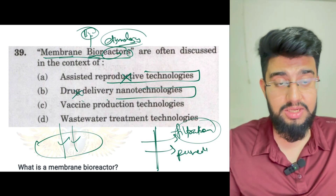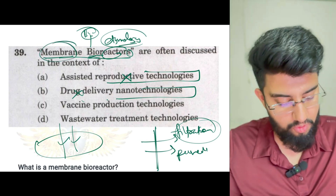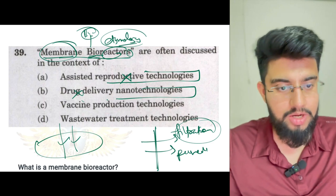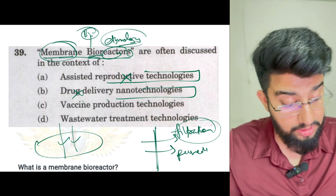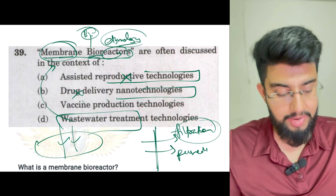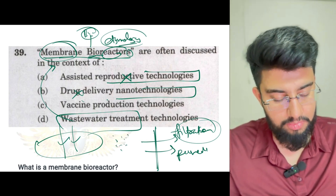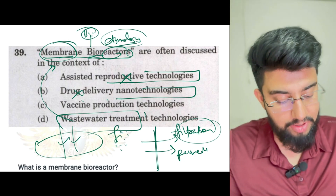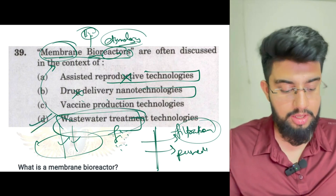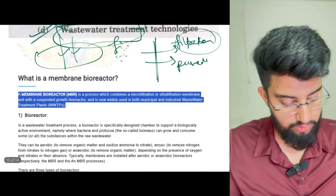Vaccine production technology — what will a membrane do here? What will a bioreaction do — maybe something you can handle, but what would a membrane do here? Wastewater treatment — filtration — you can relate with membrane, and then maybe some biological beings you can use to filter it even more. So wastewater treatment has a linkage with the etymology of membrane bioreactors.